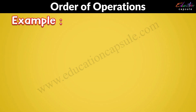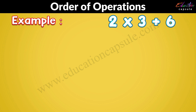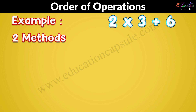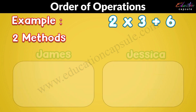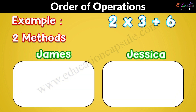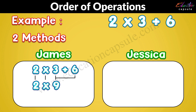For example, here we have a calculation: 2 times 3 add 6. There are two ways of solving this calculation. Let's see how these two kids have solved the question. James has done addition first — he did 3 add 6 which is 9, then he did 2 times 9 which is 18.